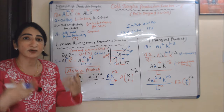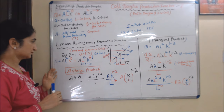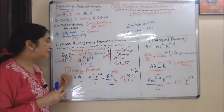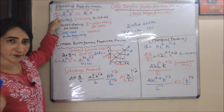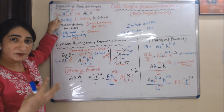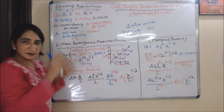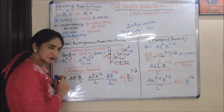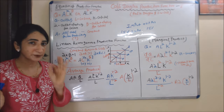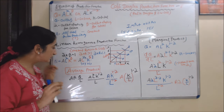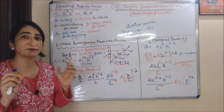We know we are getting constant return to scale when alpha plus beta is equal to 1. Now we will calculate average product and marginal product using this equation. The formula for average product is Q over L. We simply put the value of Q into the formula.